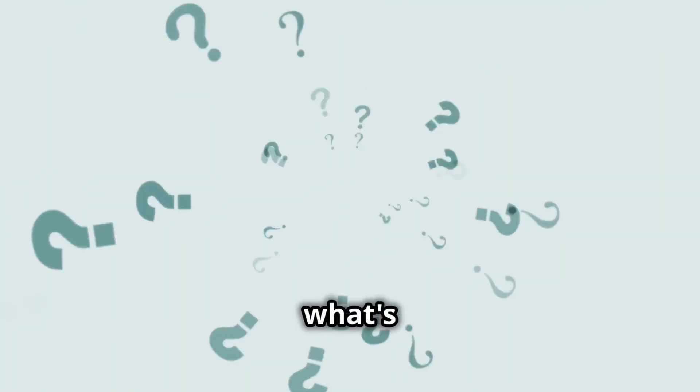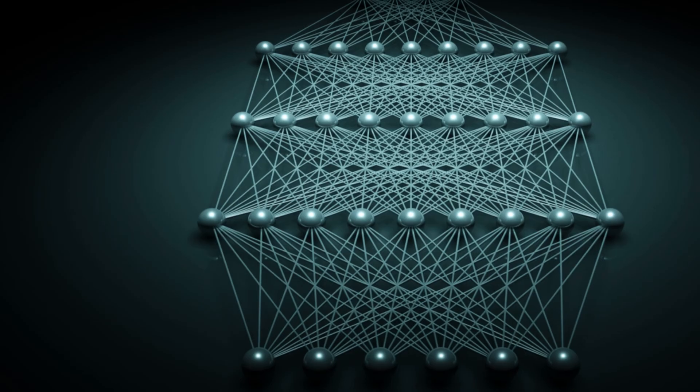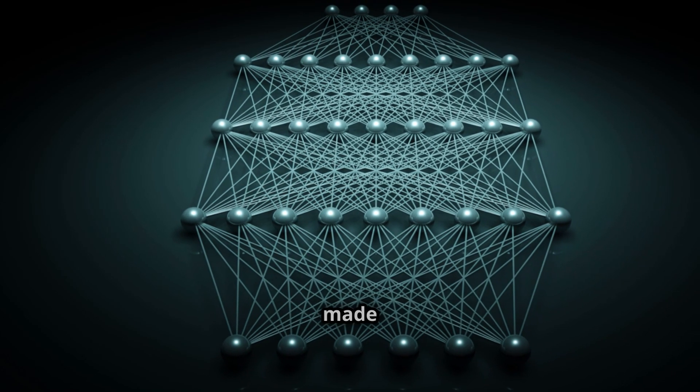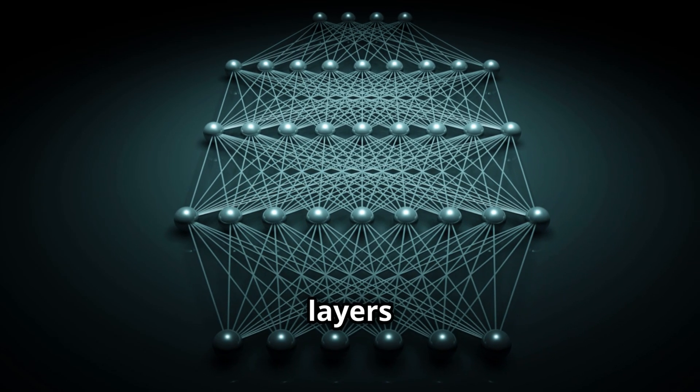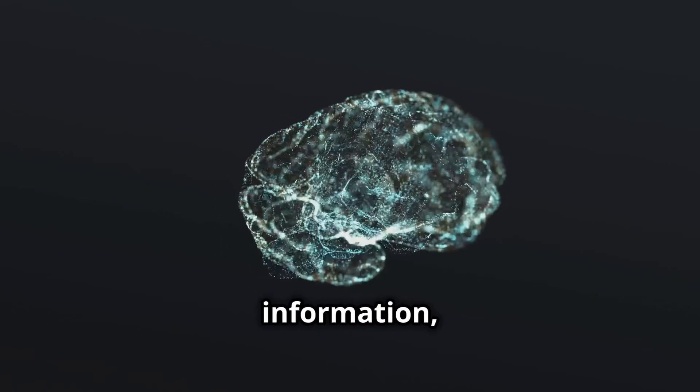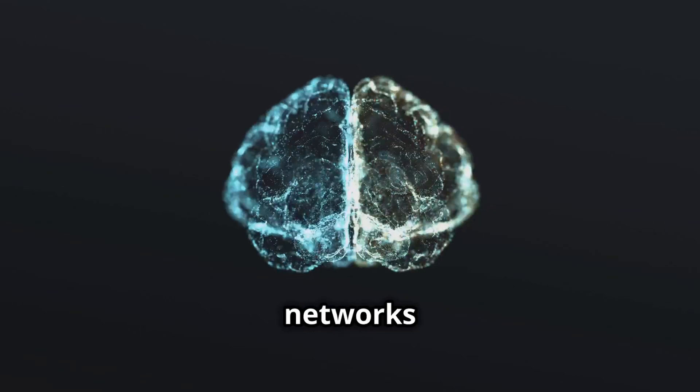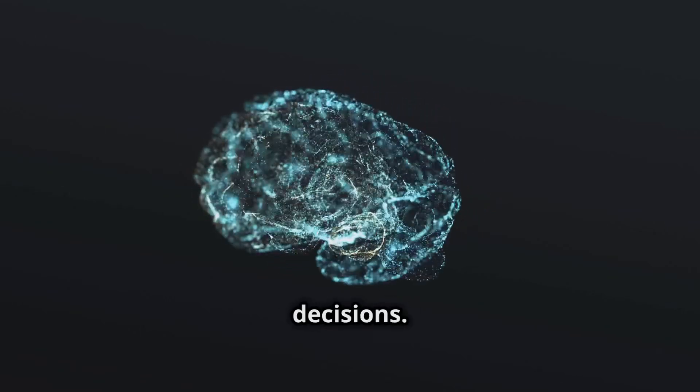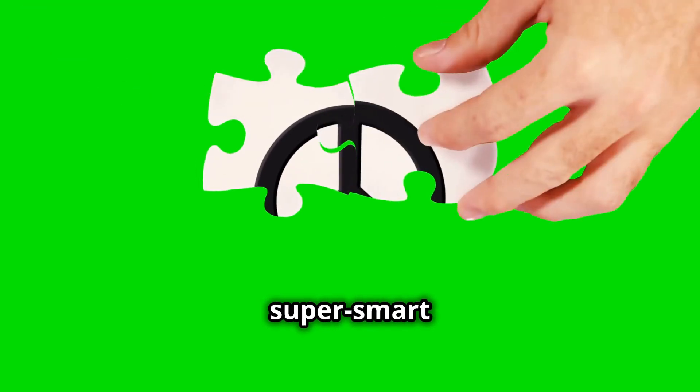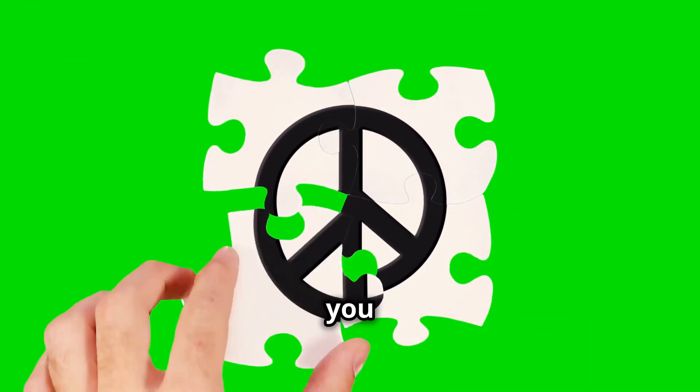So, what's an artificial neural network? Picture it as a brain for a computer, made up of layers and layers of neurons. Just like how your brain processes information, these neural networks process data to make decisions. It's kind of like having a bunch of tiny, super smart friends helping you solve a problem.